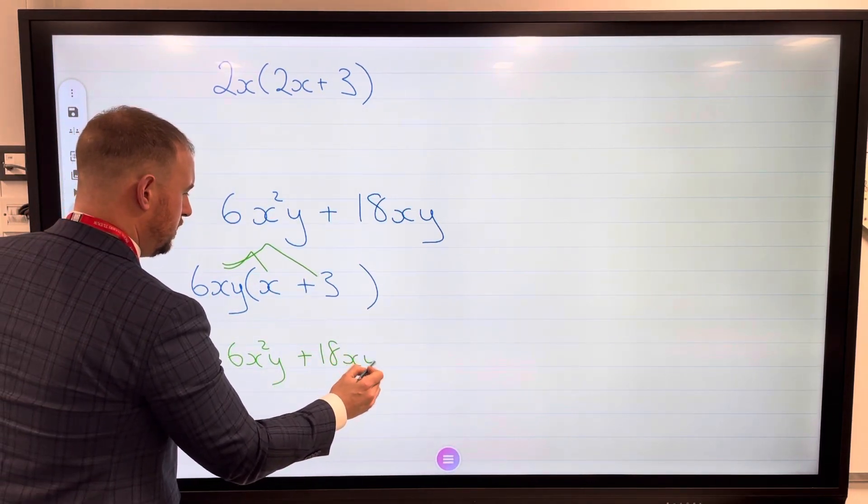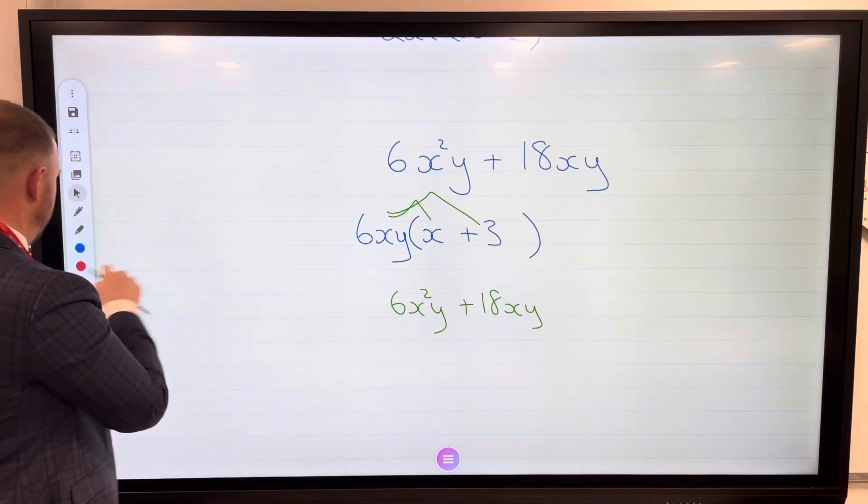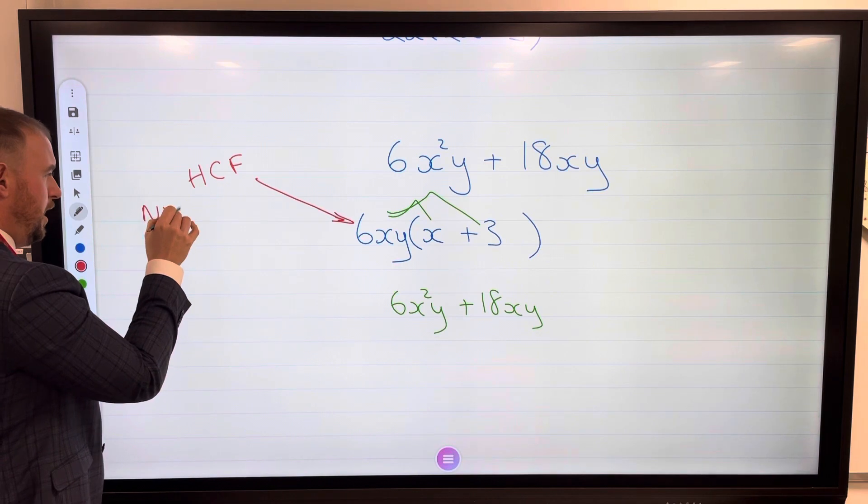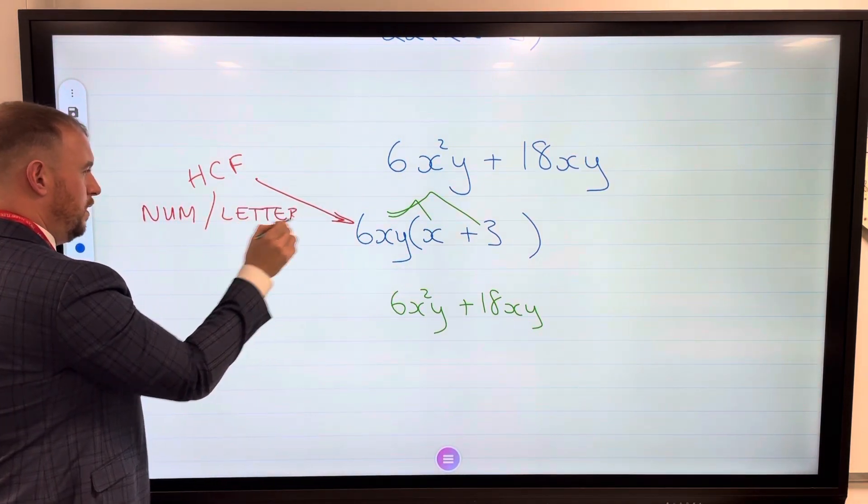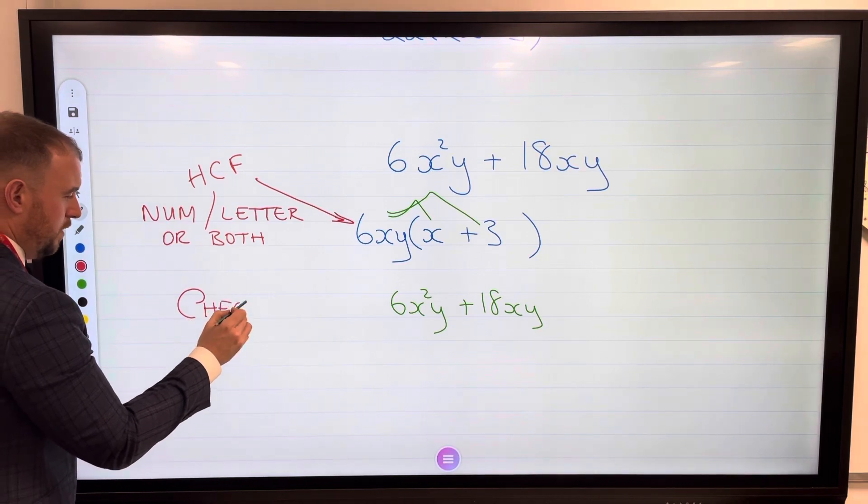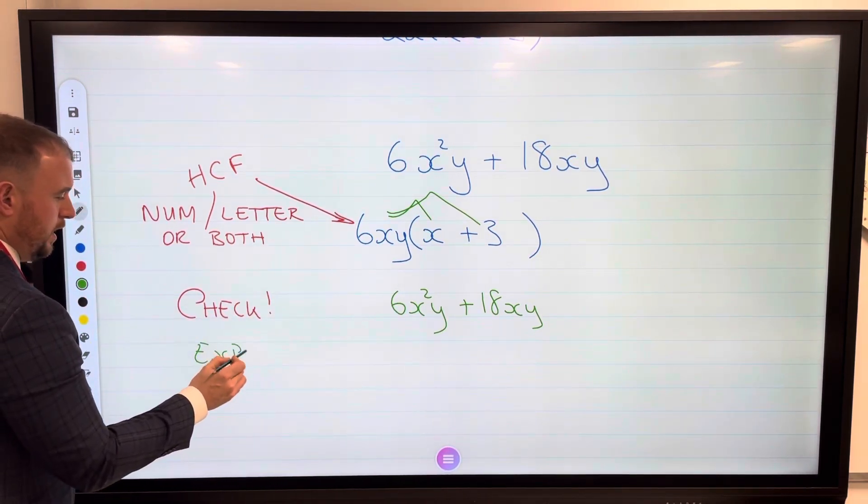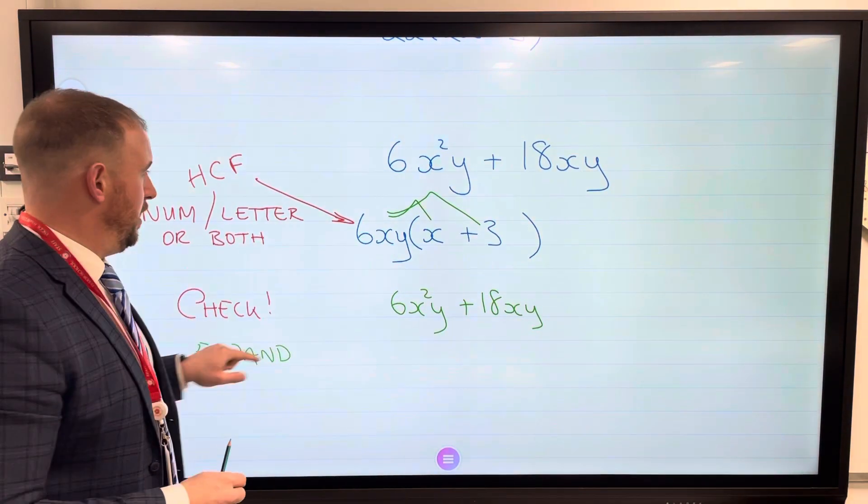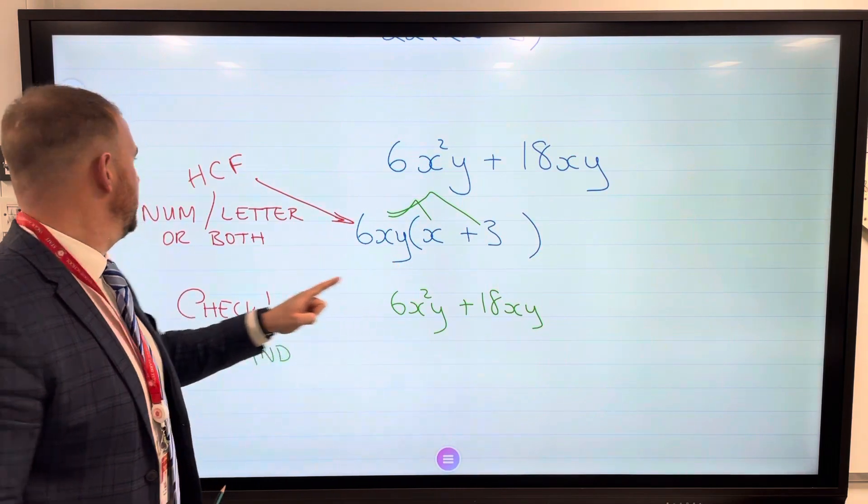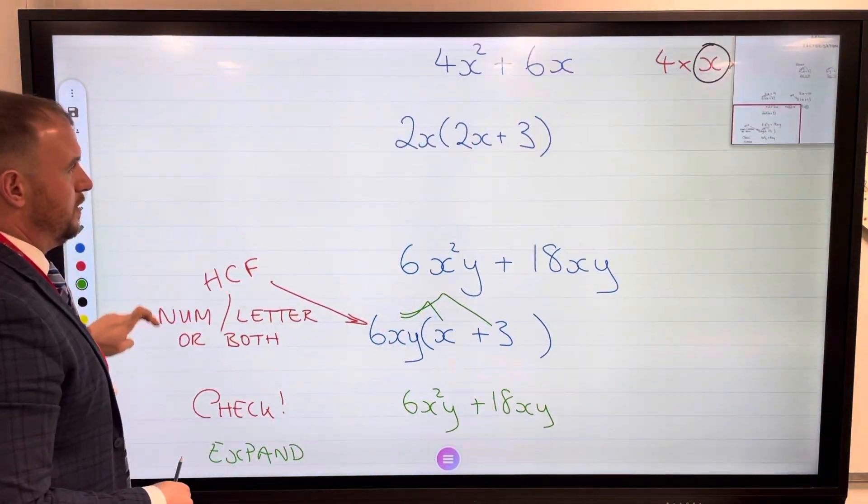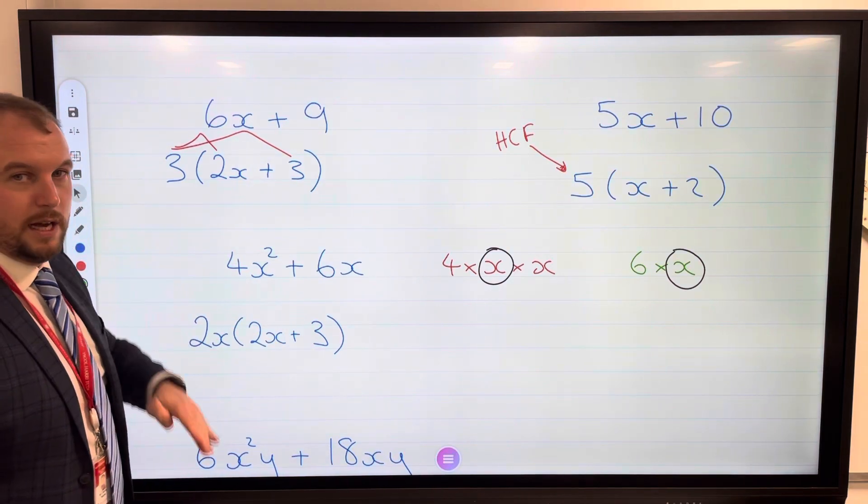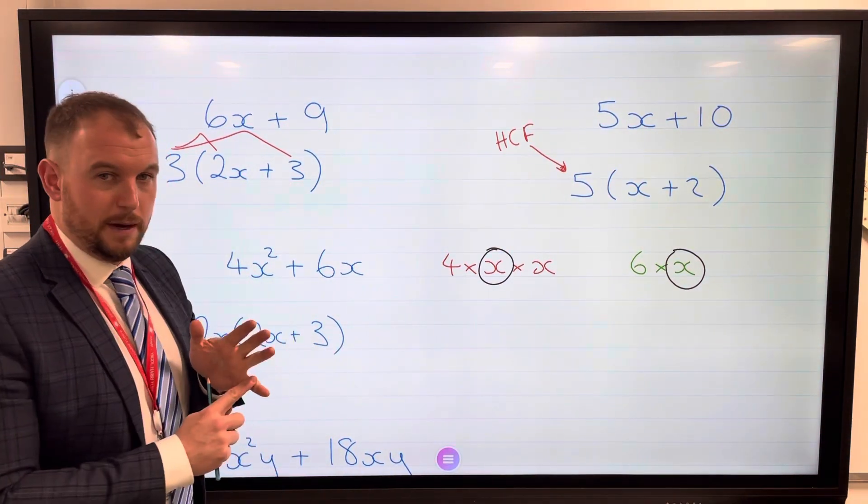Just a very quick recap: the most important part is this bit here, this is our highest common factor. It could be a number, a letter, or both. Our checking mechanism is to expand. If when you expand it as a checking part, if it's not exactly the same as that, you know you've made a mistake somewhere. So the best advice would be to check your highest common factor. Yes, this one is a very tricky one. However, you might want to start with these easier ones until you get more confident, and then build up the layers as you go. Highest common factor, fill in the gaps, expand to check. Hope it helps.